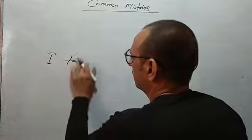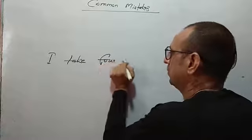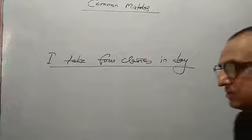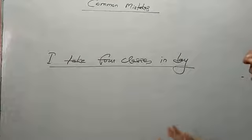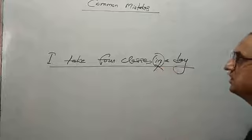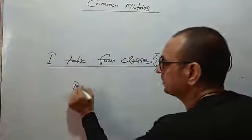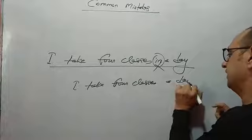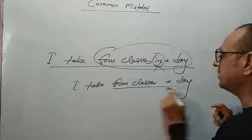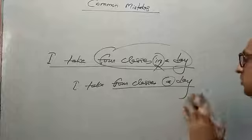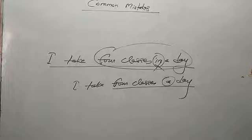Next expression: 'I take four classes in a day.' This sentence sounds absolutely correct, but when we are talking about a ratio, we do not use a preposition. Here, the preposition 'in' is inappropriate. The correct sentence is: 'I take four classes a day.' When expressing a ratio, 'a' acts as a weakened form of a preposition, so there is no need to add a separate preposition like 'in.'